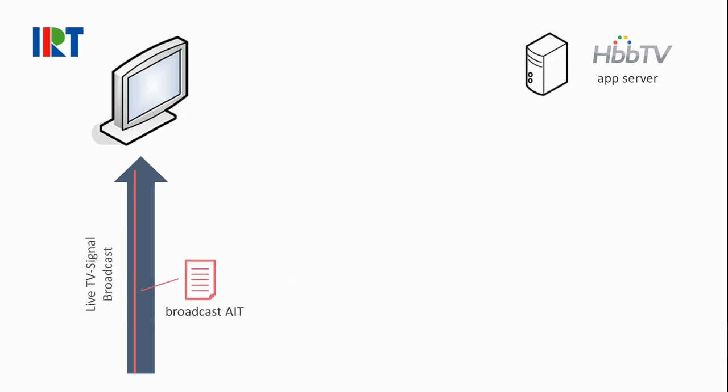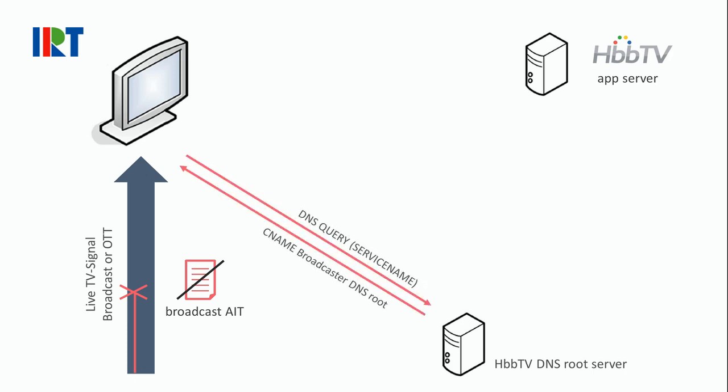This standard defines an HbbTV DNS root server which has a fixed domain and can thus be found by all HbbTV receivers. When there is a channel change made on the HbbTV receiver and no AIT is found in the broadcast, the receiver can make a request to the HbbTV DNS root server and send a country code and a service name as parameters with this request.